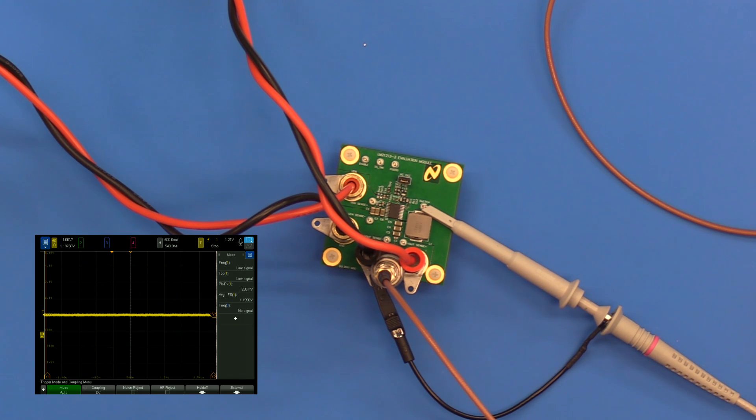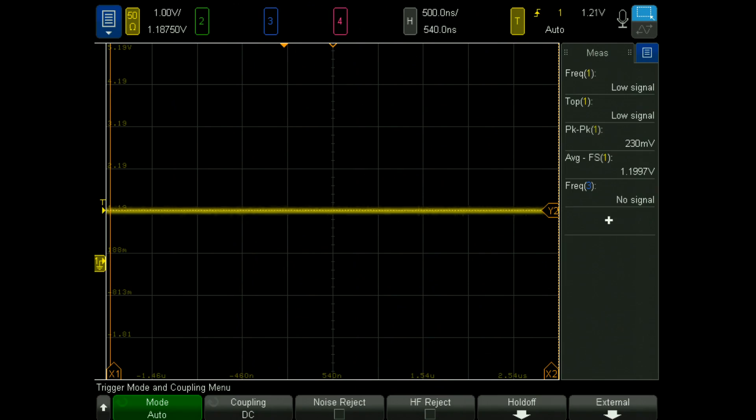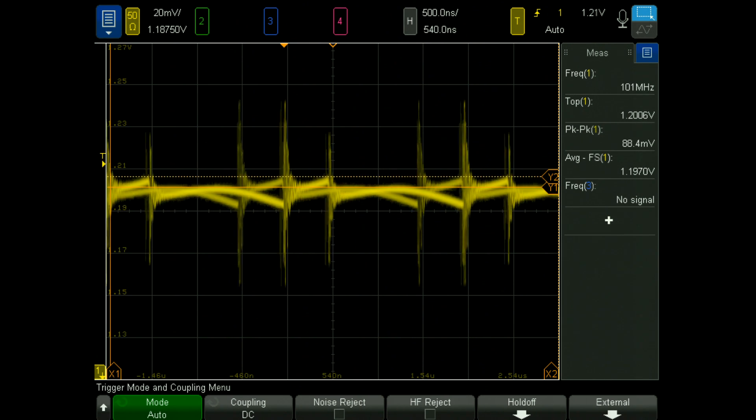In order to properly measure ripple voltage, we will connect the buck regulator output to a DC load set to draw 3 amps of current and an active power rail probe in order to have a complete picture of the voltage output. Now here we can see that we are getting a DC voltage of 1.2 volts.